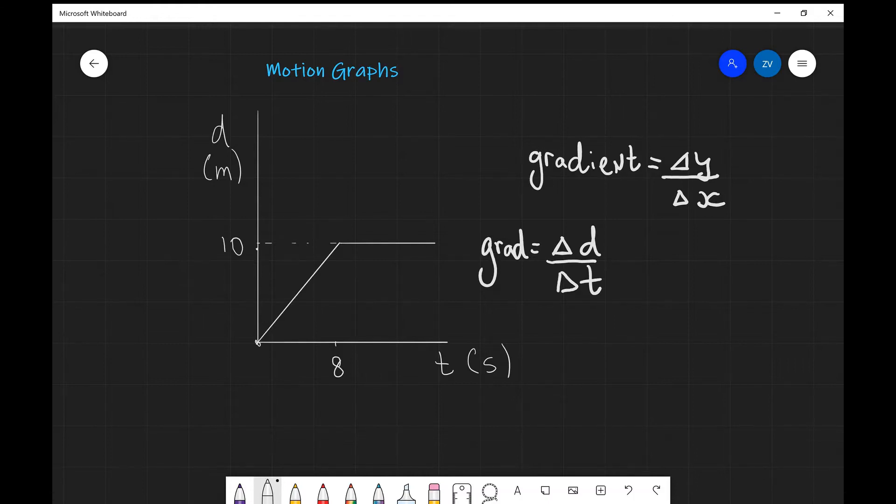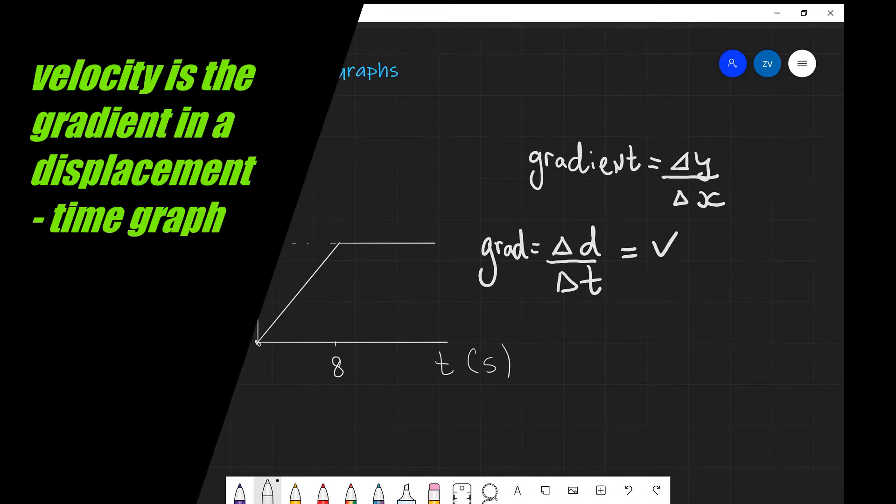However, this is actually the very definition of speed. It's the rate of change of displacement. Remember anytime we have anything divided by delta t, that's essentially the rate of change or how the displacement changes with time. So this is our velocity. The velocity in a displacement against time graph is the gradient.